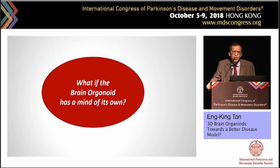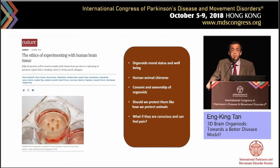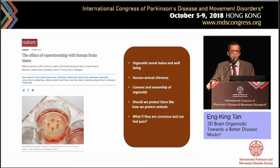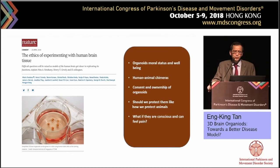My last two slides address a question that is increasingly being asked: what if the brain organoid develops a mind of its own — is it possible? We think perhaps at this moment it is too early to say. But just a couple of months ago a Nature commentary and review looked at the potential and suggested we should start thinking about the moral status of these organoids, human-animal chimeras, and what happens if one day we think that organoids with enough cells and enough connectivity could be conscious — whether they could even feel pain. These are important ethical issues we need to be thinking about.